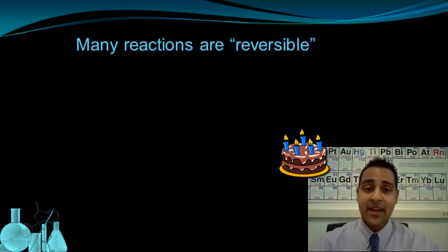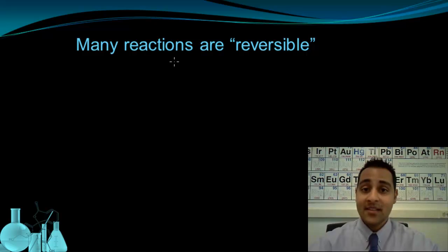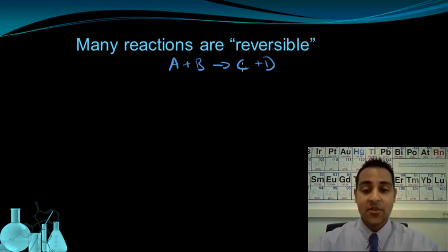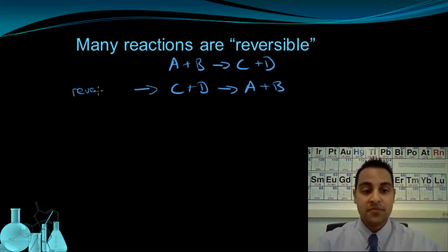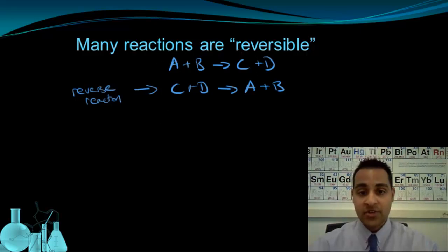That said, many reactions are reversible. Let's consider the reaction of A plus B to form products C and D. If C and D can react together to reform A and B, then this reaction overall we call reversible. In fact, this second reaction is called the reverse reaction — it is literally just the forward reaction backwards.